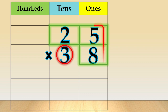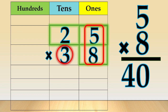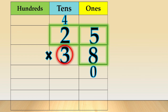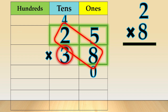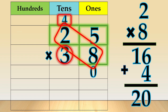So, 5 times 8 is equal to 40. We write 0 in the ones column. Now, we carry 4 to the tens place. Next, we multiply 2 times 8 is equal to 16. Add the 4 tens that you have carried over: 16 plus 4 is equal to 20. We write 0 in the tens column and 2 in the hundreds column.